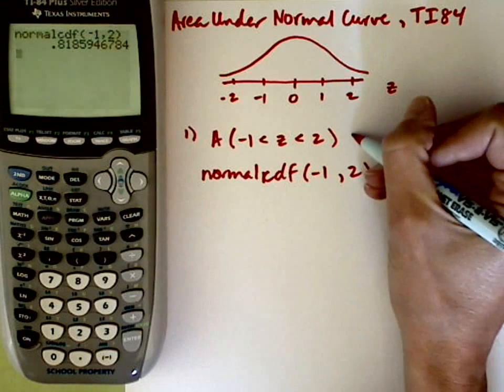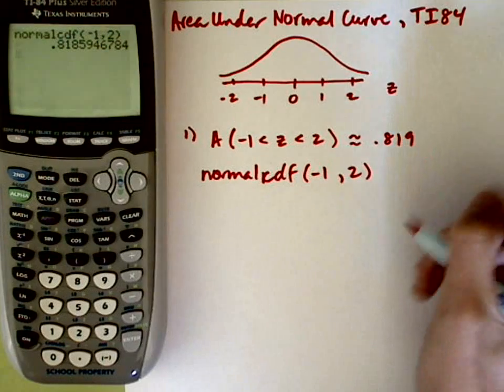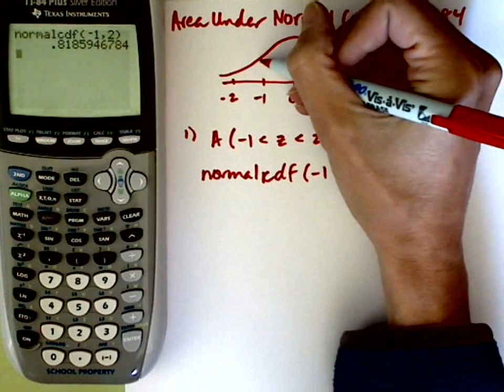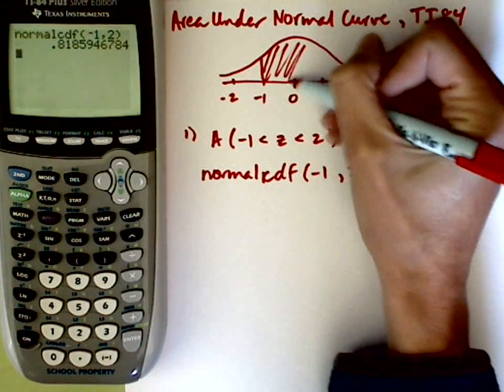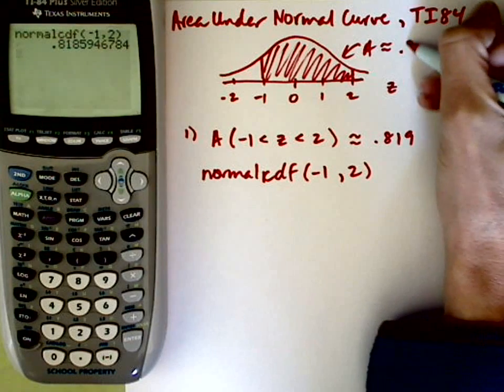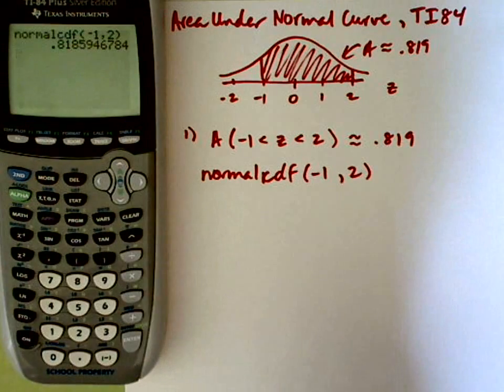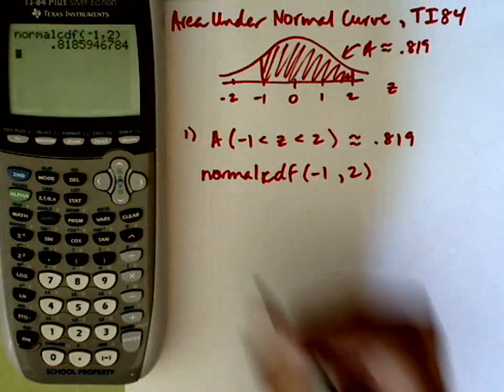What it's giving me is an area, and I'll just approximate this, of 0.81, I'll round to 0.819. So the area under the normal curve between negative 1 and 2, I'll shade that in, is about 0.819. Remember the area under the entire curve is 1, so this is a very reasonable answer.